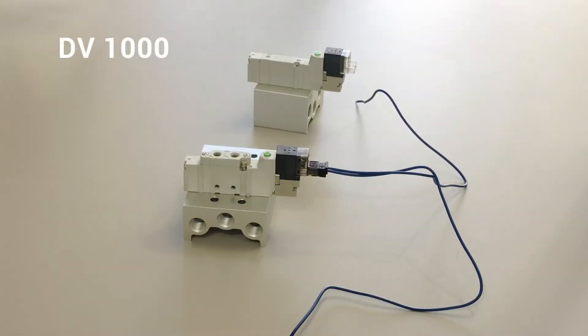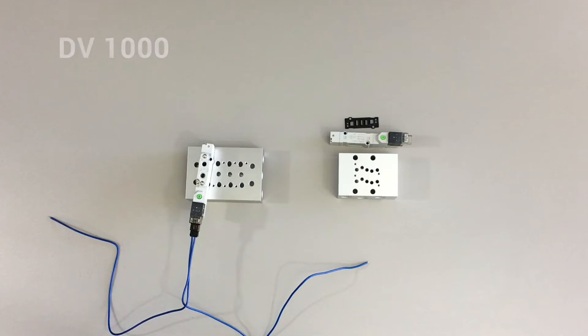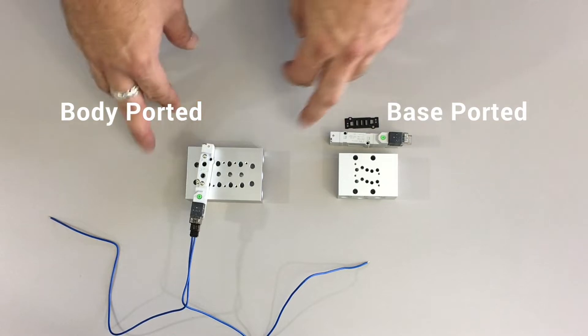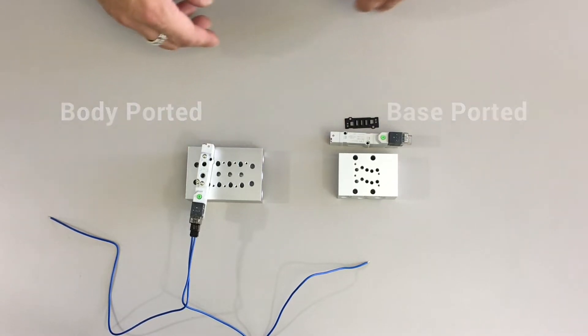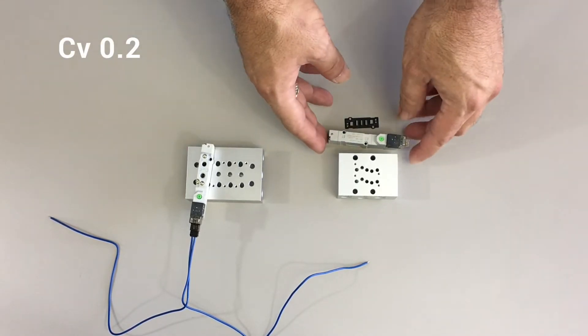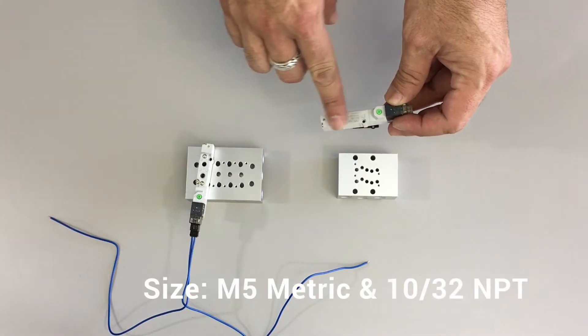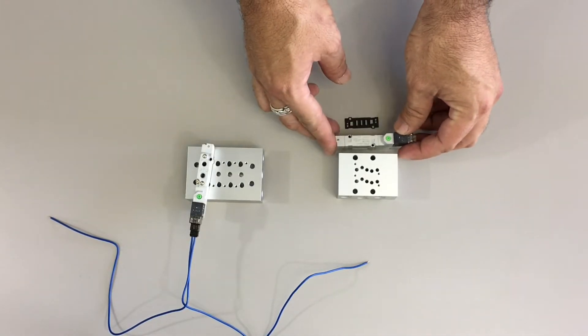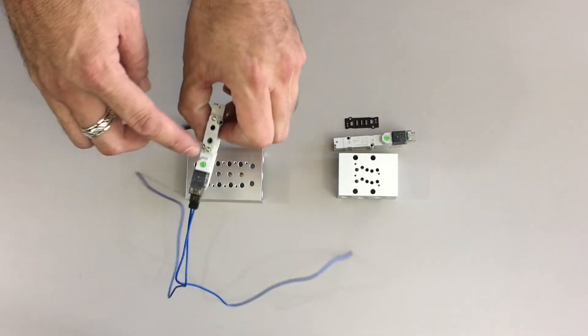This is our DV1000 series of valves. We have two different types. We have the base-mounted type and the body-ported type. The differences are on the base-mounted type we don't have the ports on the valve, and on the body-ported type you do have ports on the valve.